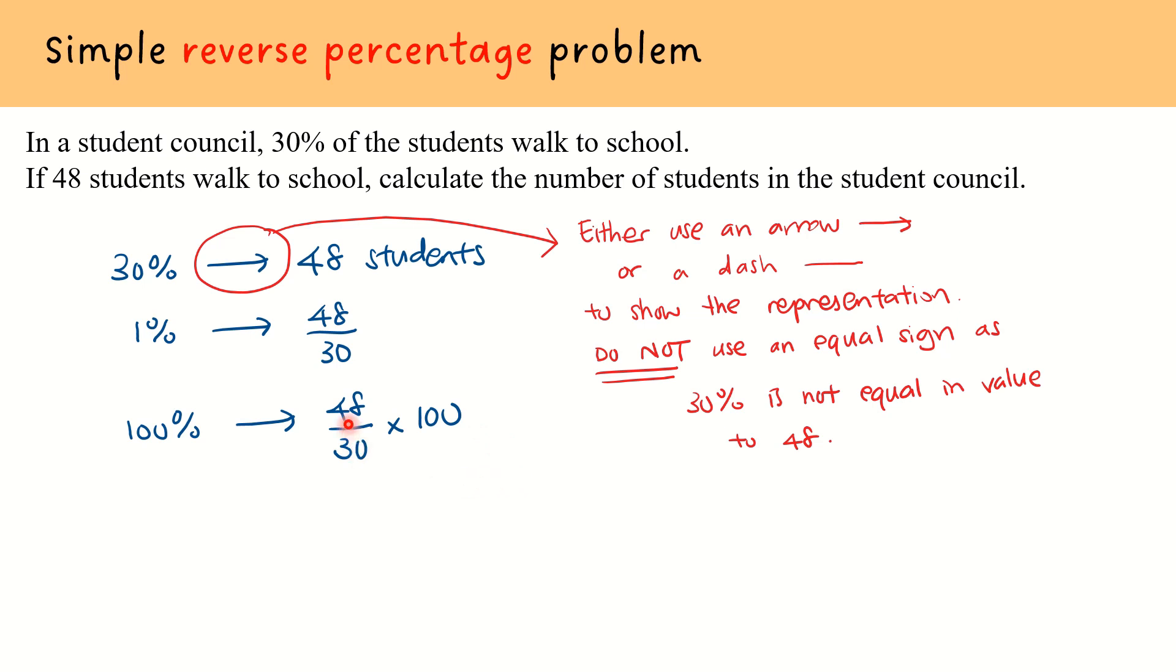Therefore, when we calculate 48 over 30 times 100, we get the value 160 and conclude that there are 160 students in the student council.